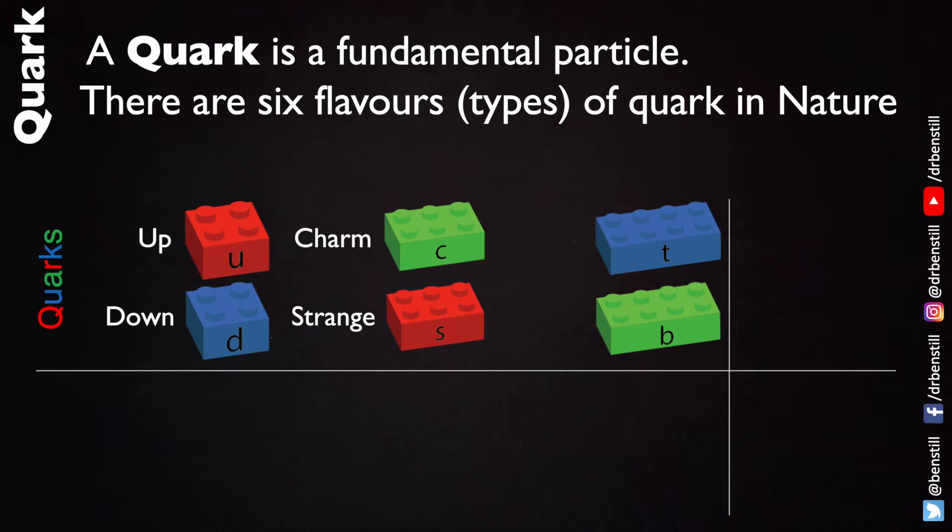There are heavier versions still of the up called the top quark. Then there is a heavier version still of the down called the bottom quark. The top and the bottom quark are so massive that they're actually heavier than the proton itself. These quarks are only really found in very high energy scenarios such as in particle accelerators like the Large Hadron Collider.